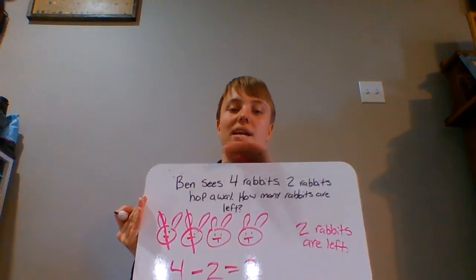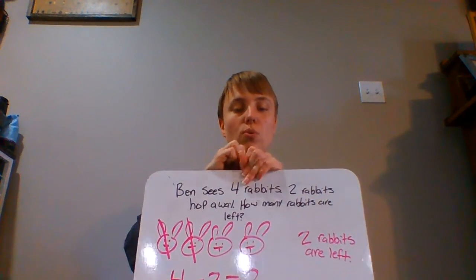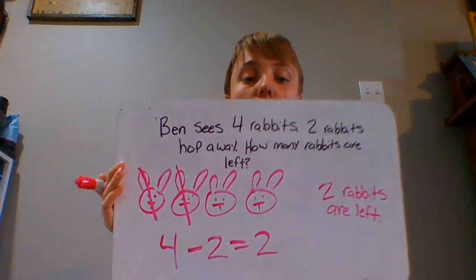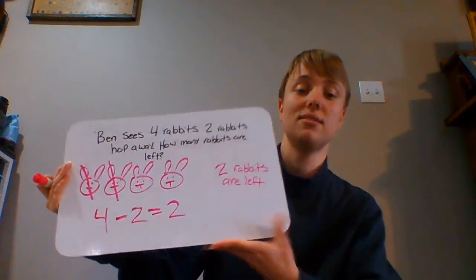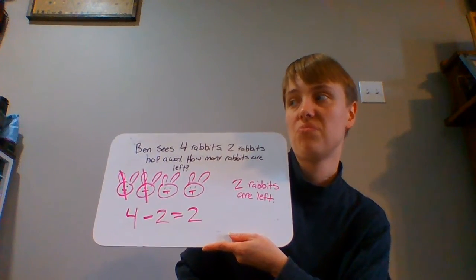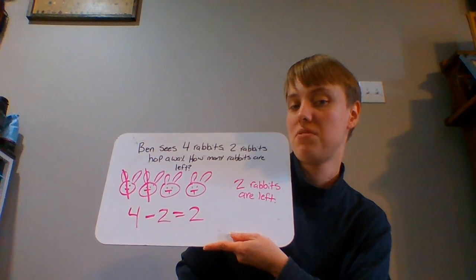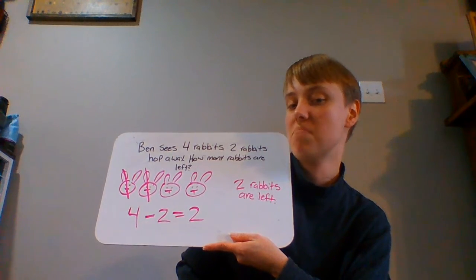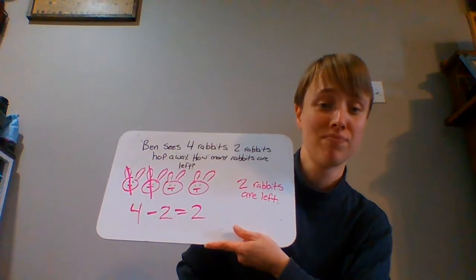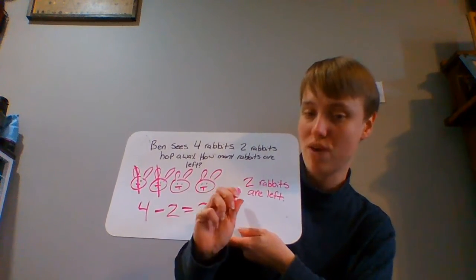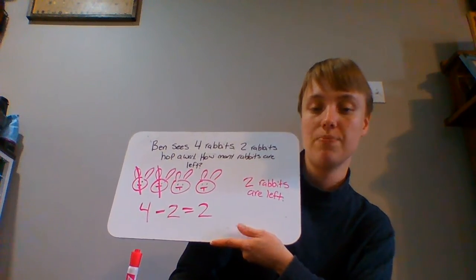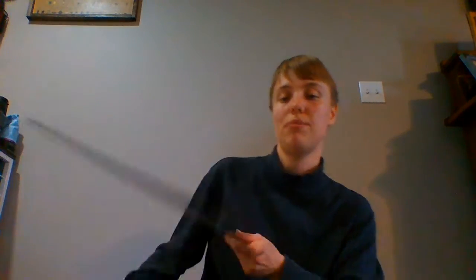Now when you are writing out the answer in word form to a subtraction problem, you always want to have it be a complete sentence. So if I just said 'two rabbits' for my answer — two rabbits what? Two rabbits left? Two rabbits came and joined the other rabbits? Two rabbits are dancing? So answering 'two rabbits are left in the group' is what you want to do. So that would be a basic subtraction problem.